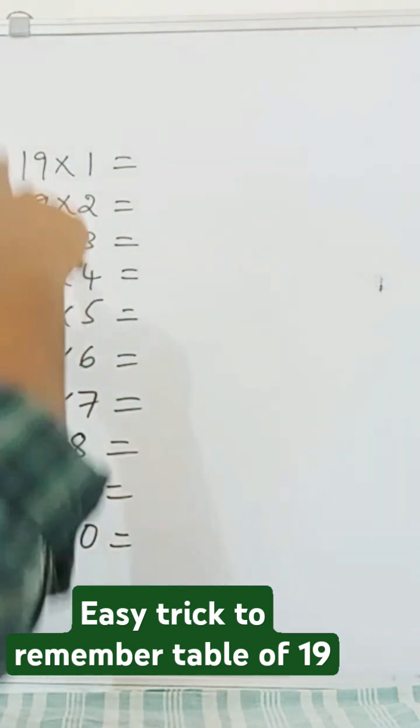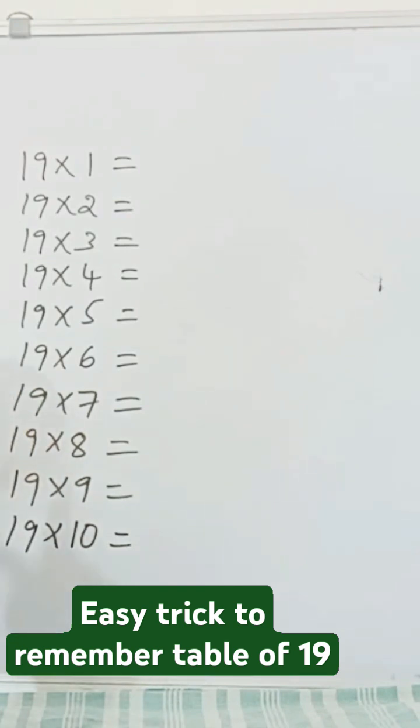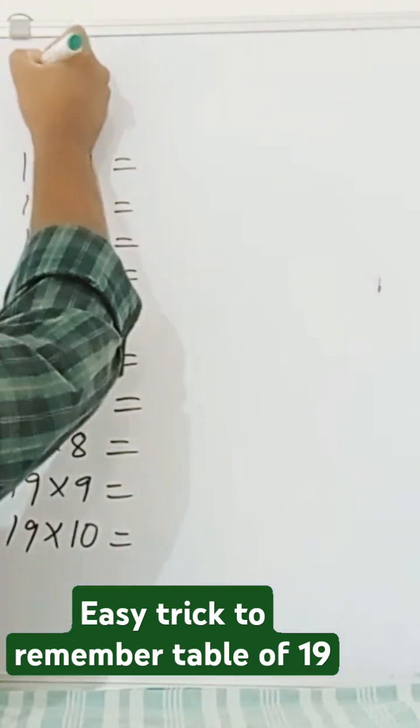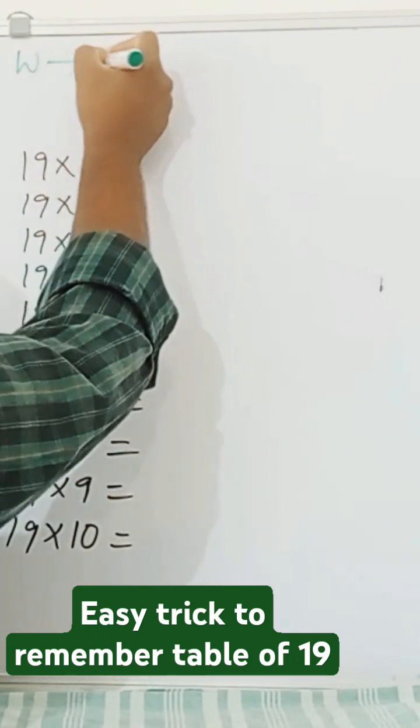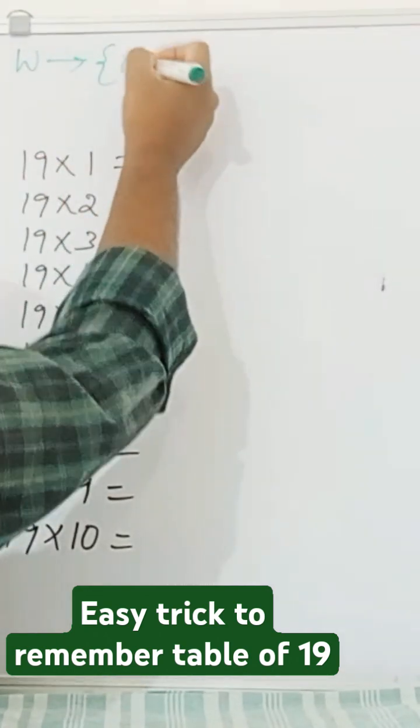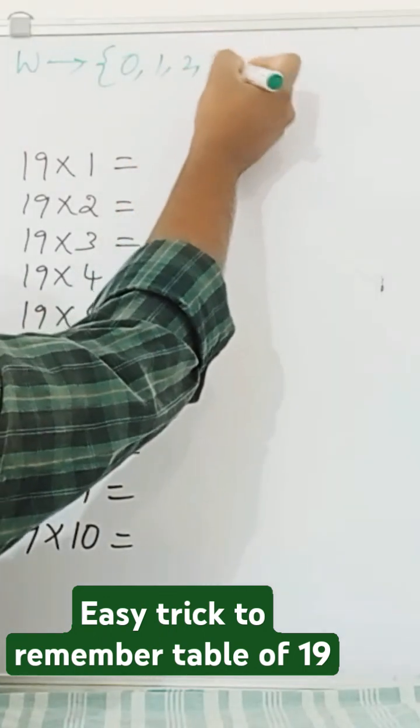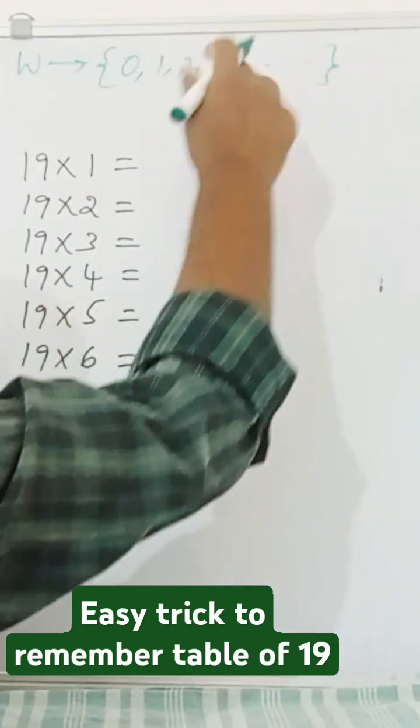Hey, how to remember this table of 19? It's very easy to remember. I will show first set of whole numbers starts from 0. It starts from 0, 1, 2, 3 till infinity.